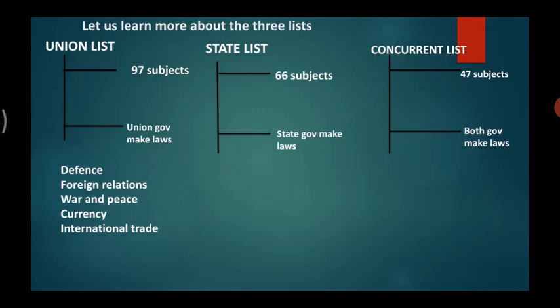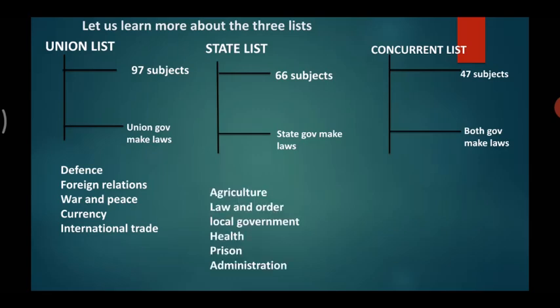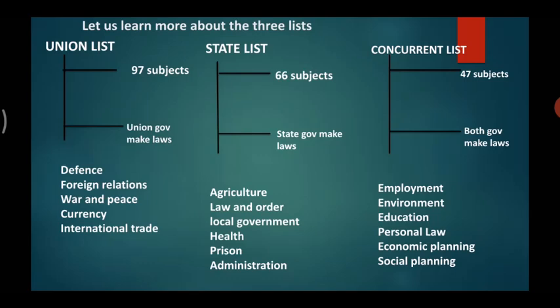Subjects included in the state list are agriculture, law and order, local government, health, and prison administration. Subjects included in both the union and state government — that is, in the concurrent list — are employment, environment, education, personal law, economic planning, and social planning. So the powers are divided between the state government and the union government.